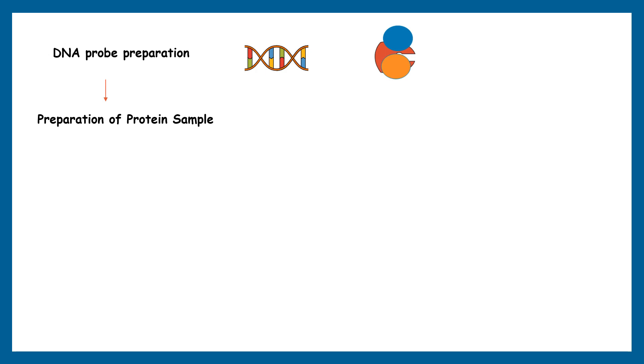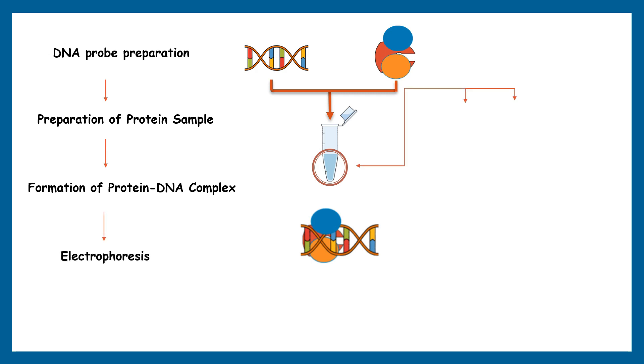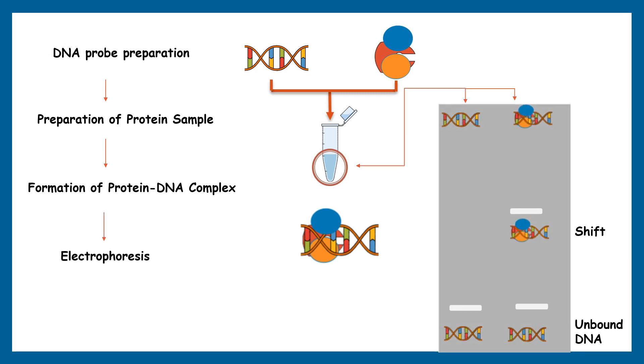Then this purified protein is mixed with the labeled DNA probes in a test tube. If the protein specifically binds to the DNA sequence in the probe, a protein-DNA complex will form. These samples are then loaded into wells of an electrophoresis gel, typically made of polyacrylamide gel or agarose gel.